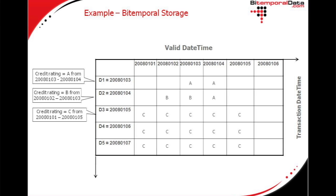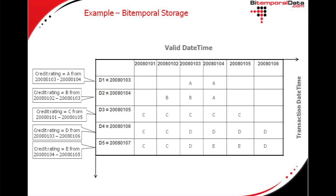The third event is another correction and some additional information — we now think the credit rating was C from the first until the fifth. Then event D brings some corrections and new information, and event E brings another correction. There are good reasons behind how this layout works and why these specific events were chosen in this pattern, which we'll get into later.